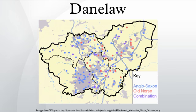The Danelaw, as recorded in the Anglo-Saxon Chronicle, is a historical name given to the part of England in which the laws of the Danes held sway and dominated those of the Anglo-Saxons. It is contrasted with West-Saxon Law and Mercian Law. The term has been extended by modern historians to be geographical. The areas that constituted the Danelaw are in northern and eastern England. The origins of the Danelaw arose from the Viking expansion of the 9th century AD, although the term was not used to describe a geographic area until the 11th century AD.